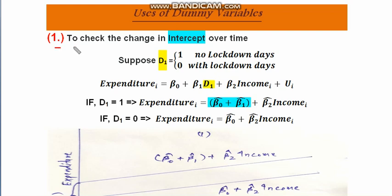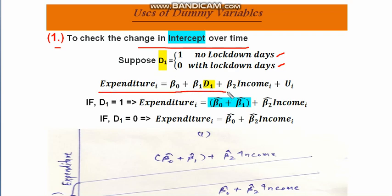The first use is to check the change in intercept over time. Consider two time periods as a dummy variable with two attributes: no-lockdown days and lockdown days. Since there are two attributes, we include one dummy variable. We assume that expenditure is affected by whether it is a lockdown or no-lockdown day, as well as income.